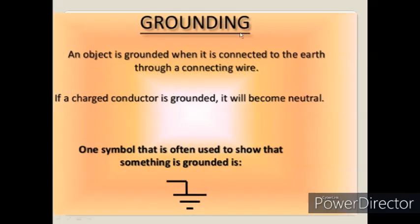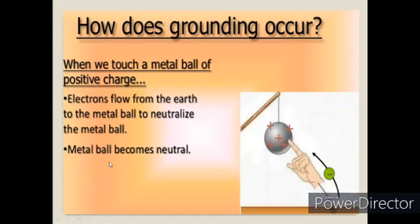Next is grounding. An object is grounded when it is connected to the earth through a connecting wire. If a charged conductor is grounded it will become neutral. This is the symbol used to represent grounding.